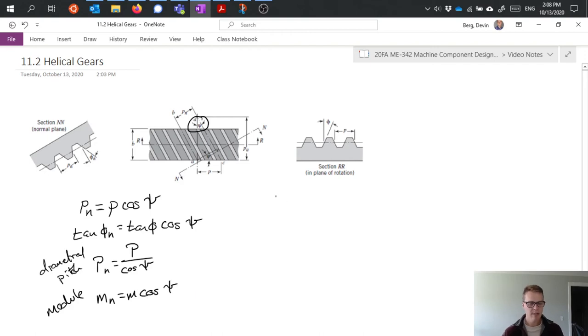We can still write gear diameter in terms of number of teeth and diametral pitch, just making the modification for the helix configuration by substituting in. And similarly when we're talking about SI units, something like that.